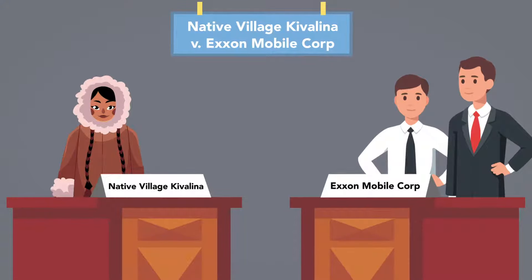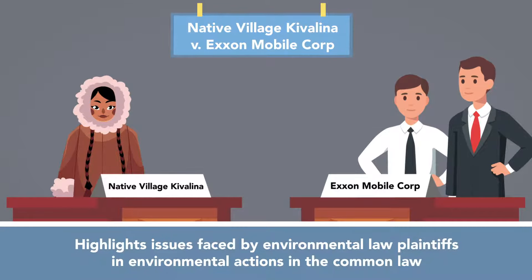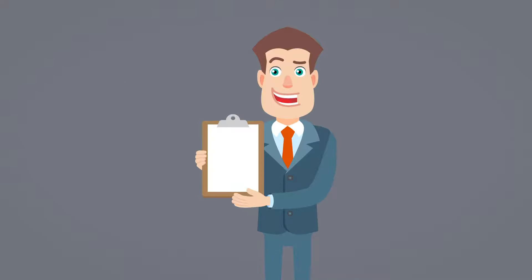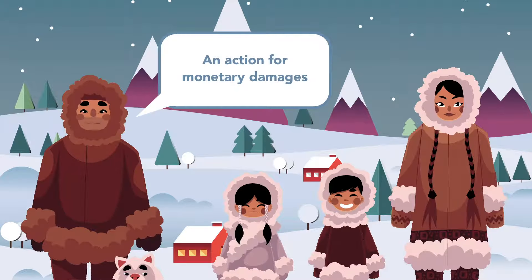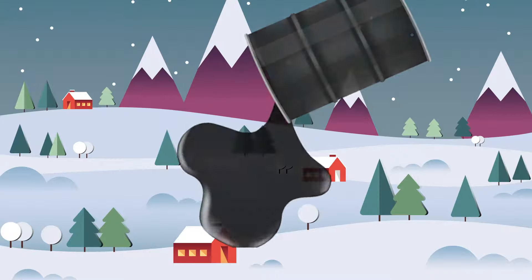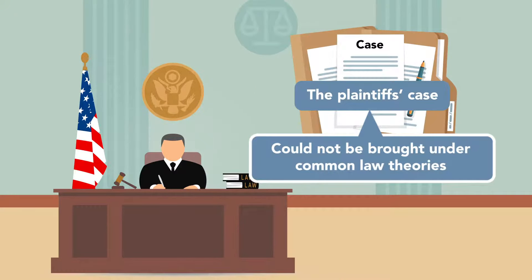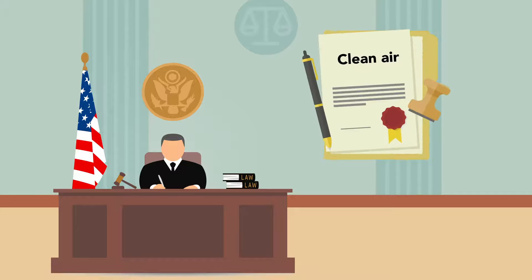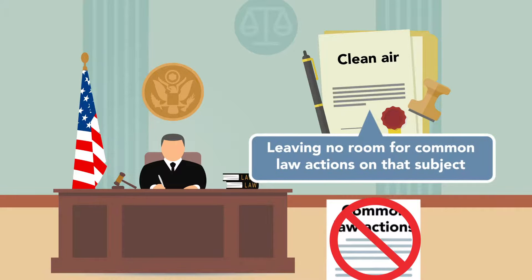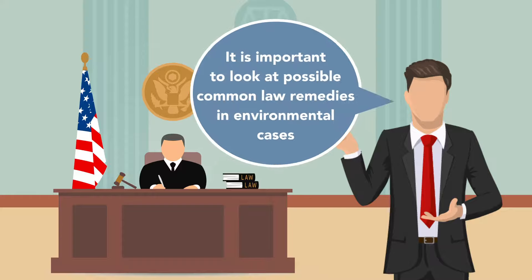These limitations have prevented many plaintiffs in environmental actions from being able to recover. Native Village Kivalina v. ExxonMobil Corp. is a recent environmental case that highlights issues faced by environmental law plaintiffs under the common law. This case involved an action for monetary damages brought by the residents of a native Alaskan village affected by climate change, who alleged that the defendant oil companies were contributing to global climate change. The court dismissed the claim, finding that the field of clean air and air pollution is covered by the Clean Air Act, leaving no room for common law actions on that subject. Some experts have called the ruling in the Kivalina case the end of climate change tort litigation. Still, it is important to look at possible common law remedies in environmental cases.